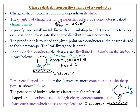For example, assuming the amount of charge on a given conductor is 20 Coulombs and the area of that conductor is 2 square metres, then the charge density is simply the quantity of charge divided by the area. So 20 Coulombs divided by 2 square metres gives a charge density of 10 Coulombs per square metre.